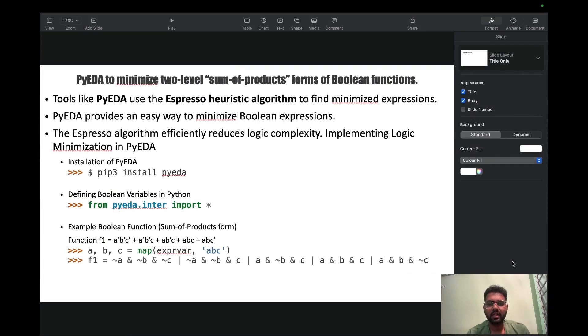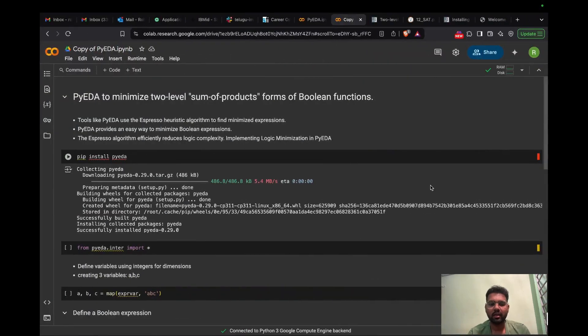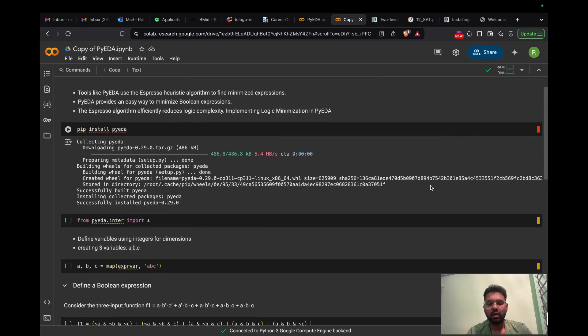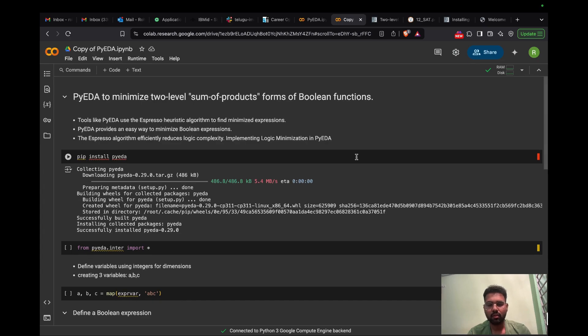So in previous slides, we have seen and understood how Espresso algorithm works step by step. Also, we took an example and showed how Espresso algorithm minimizes the Boolean function to its lowest. Now we will see how this can be implemented in code. Espresso algorithm has many huge applications in VLSI, electronics, and embedded systems and many other fields. There we can face large issues to solve such huge problems. We need a software or tool or some SAT solvers to solve these kinds of problems.